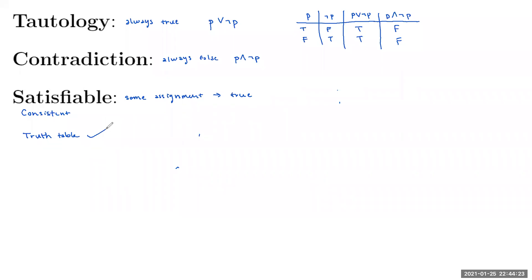Another way to show something is a tautology is to use logical equivalencies. If you're trying to prove a compound proposition is a tautology, you would show it's equivalent to true. For example, with p or not p, you'd try to show equivalence to true. When given a proposition and asked to prove it's a tautology, logical equivalencies are often the way to go.